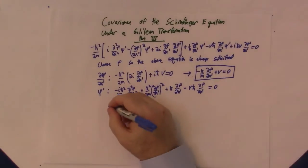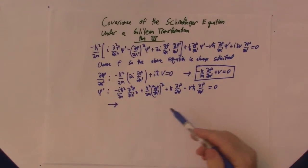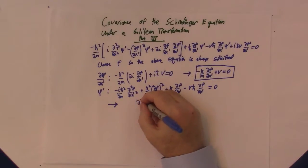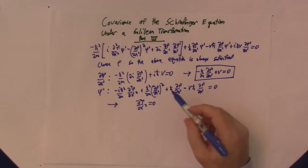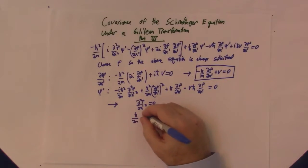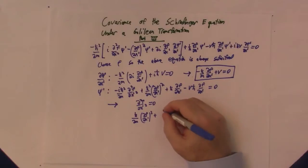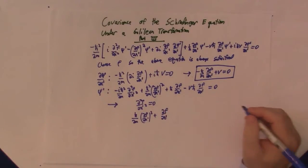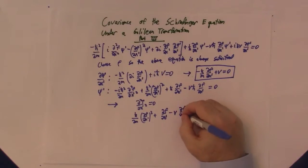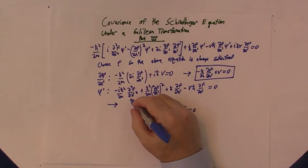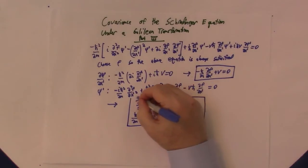Now this is equivalent to two equations because we have real and imaginary parts. This is imaginary, so we have to have the second partial of f with respect to x prime equals zero. That's one equation. Then the real part: h bar over 2m partial of f with respect to x prime squared plus partial of f with respect to t prime minus v partial of f with respect to x prime equals zero. So these are our second set of equations.